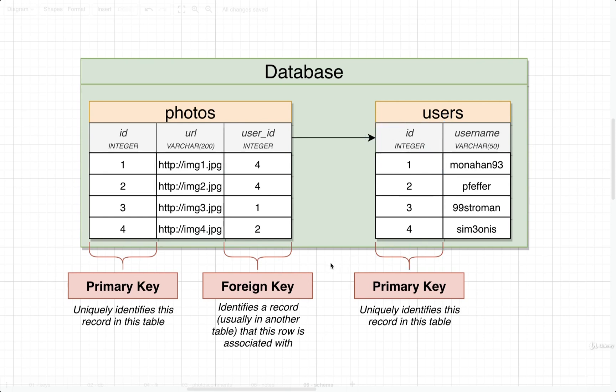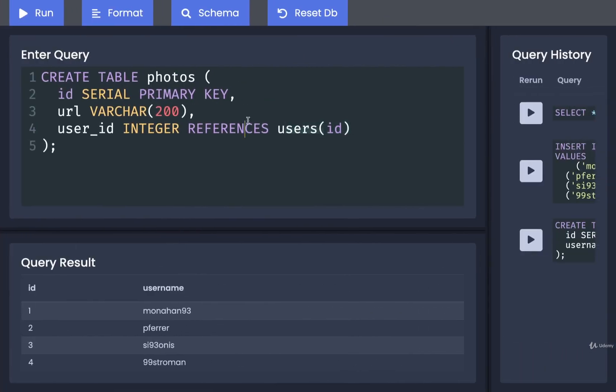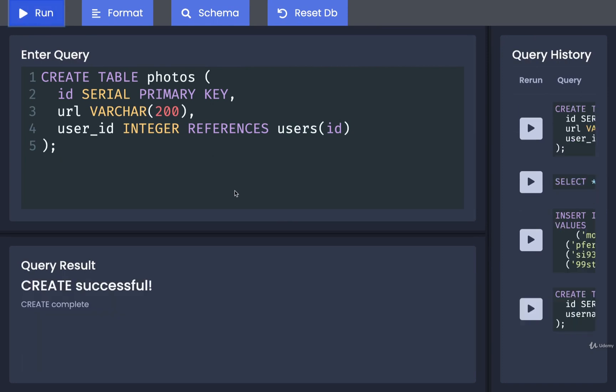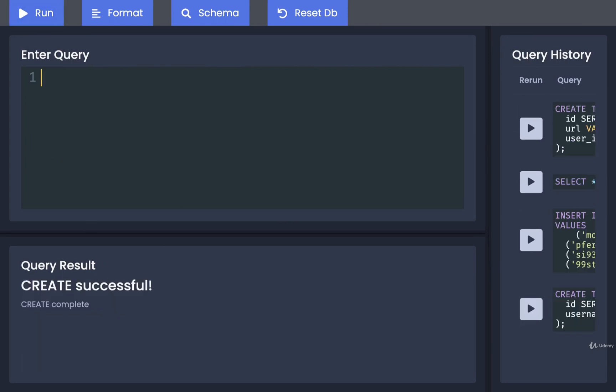So what does it really mean to mark a column as a foreign key? Well, as you'll see, it enforces some level of data consistency. That probably doesn't make a lot of sense right now, so let's just create this table and then you'll start to see what marking this column as a foreign key really does for us. I'm going to run this query — our table has been created.